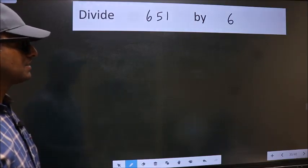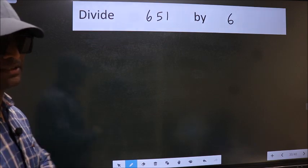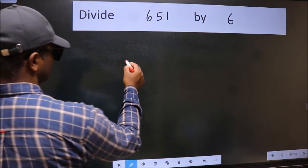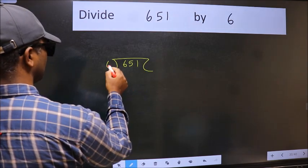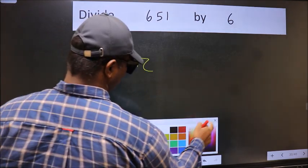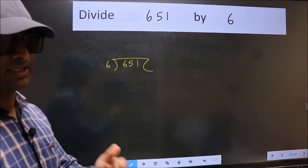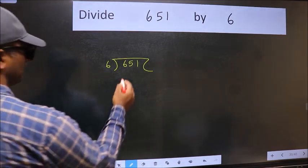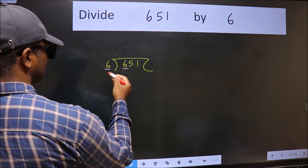To divide 651 by 6, we should frame it this way: 651 here and 6 here. This is step 1. Next, we have 6 and 6 here. When do we get 6 in the 6 table?